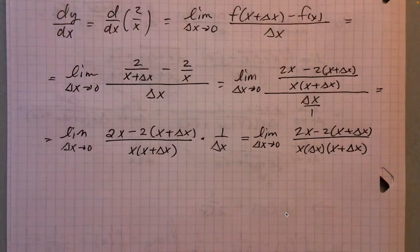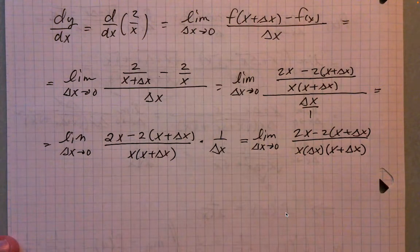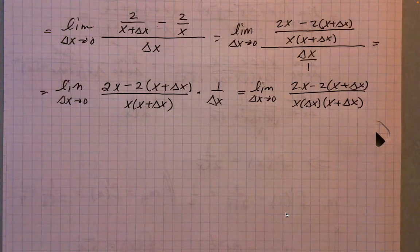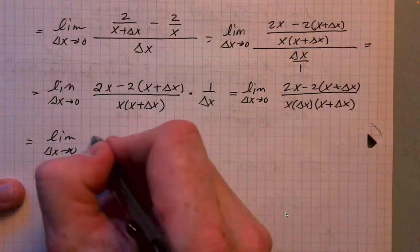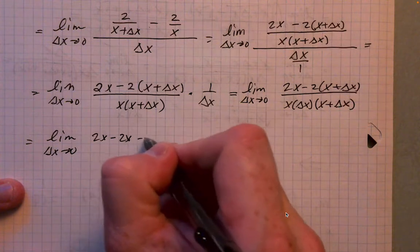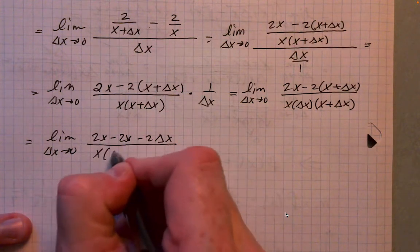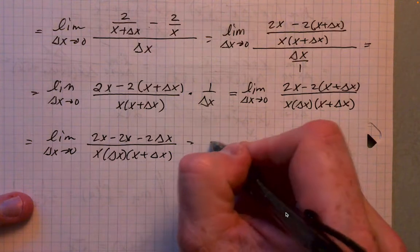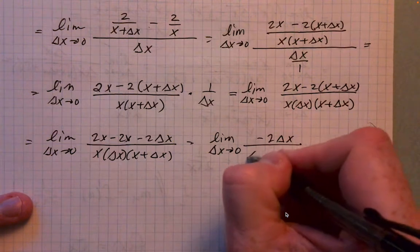That's the long way around, but I want to go through each step explicitly so there are no hang-ups over how things are being calculated. Up top we have 2x minus 2x minus 2 delta x. The 2x and minus 2x go away, leaving negative 2 delta x in the numerator.